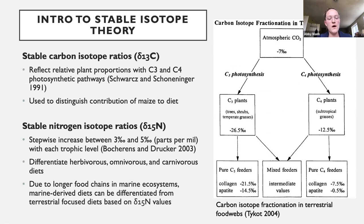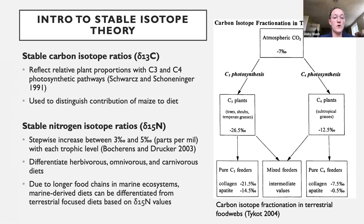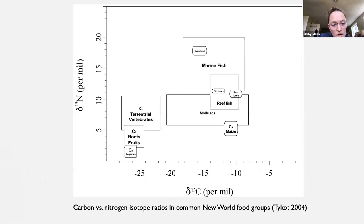The canine surrogacy framework was laid out by Guiry in 2012. It assumes two fundamental a priori assumptions: that dogs had access to human foods through scavenging, handouts, or other food sharing, and that dogs and humans metabolize and incorporate food in a similar way, showing the same isotopic fractionation. Granting these assumptions, three categories of factors might influence isotope signatures: inherent biological or behavioral differences between dogs and humans, cultural factors affecting human-dog relationships, and environmental stimuli affecting how humans cared for and fed their dogs. Stable isotope ratios reflect relative plant proportions with C3 and C4 photosynthetic pathways, and carbon-13 can distinguish maize contributions to diet. Nitrogen isotope ratios show a stepwise increase of three to five parts per mil with each trophic level, differentiating herbivorous, omnivorous, and carnivorous diets. Marine diets can also be differentiated from terrestrial diets due to longer marine food chains.